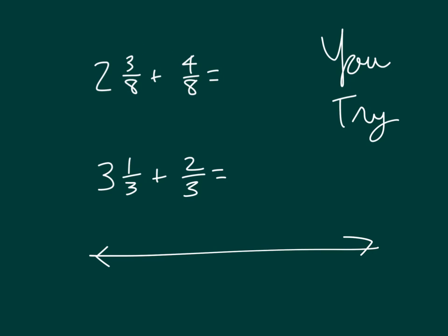Remember to add together like units. We have 3 eighths plus 4 eighths. That would equal 7 eighths. And then remember to have and to keep our whole number there because we had 2 ones. For 3 and 1 third plus 2 thirds, 1 third and 2 thirds more is 3 thirds. And then we'd have 3 wholes there.